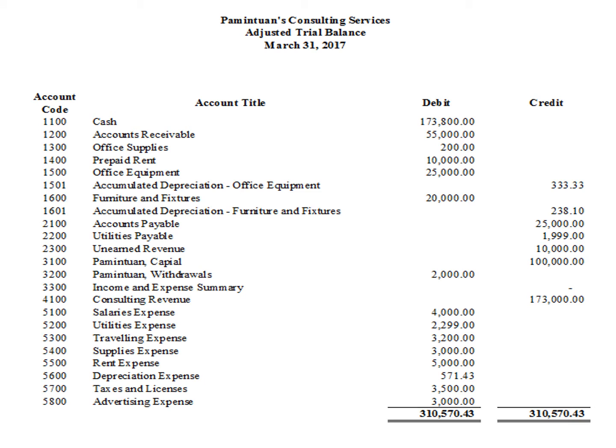This is the adjusted trial balance that we had prepared in the previous lesson. From the adjusted trial balance, we can now prepare the financial statements — the income statement and then the balance sheet. Are you ready? Okay, let's start.